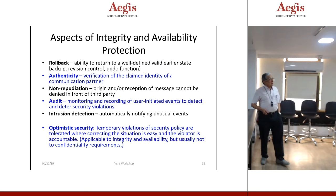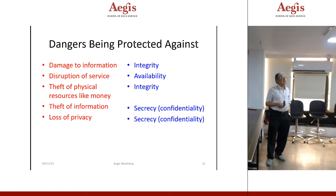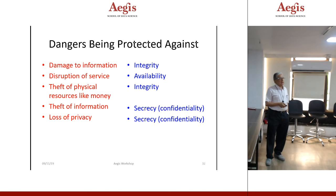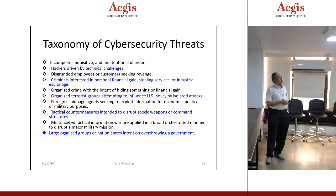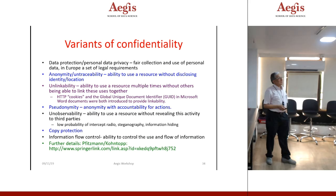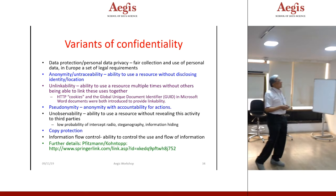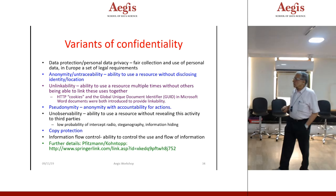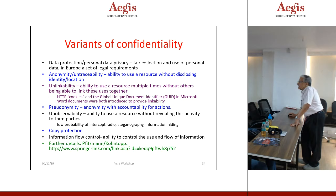Various security taxonomies exist: damage to information (integrity), disruption of service, theft of physical resources, and theft of information — secrecy/confidentiality/privacy. Variants of confidentiality include data protection. Fair collection and use of personal data in Europe is a set of legal requirements. Anonymity and untraceability refer to the ability to use a resource without disclosing identity and location. Can someone give an example of something widely used in an anonymous, untraceable way in public?